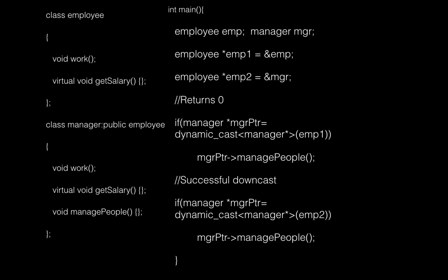Here is a simple example where Employee and Manager are two classes. Manager is derived from Employee and has an extra method called manage_people, and both have a virtual method called get_salary. In main, there are two Employee pointers, EMP1 and EMP2. EMP1 points to an Employee object, EMP2 points to a Manager object. When you use dynamic cast on EMP1, you get a null pointer. For EMP2, which points to Manager, you get a successful down cast and a valid pointer, and you can call manage_people on it.